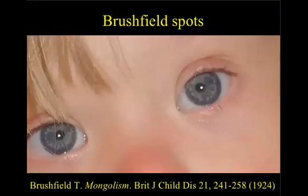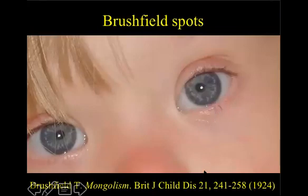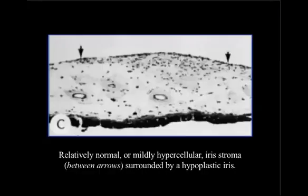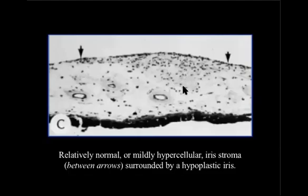As you may know, Brushfield spots were named after the English psychiatrist Thomas Brushfield, who first described them in a 1924 thesis as white spots of varying size encircling the mid-periphery of the iris in the majority of only lightly colored irides in children with Down syndrome. The histopathological examination revealed them to consist of a condensation or mound of collagen tissue, but relatively normal or mildly hypercellular iris stroma, as you see here, surrounded by a hypoplastic iris.